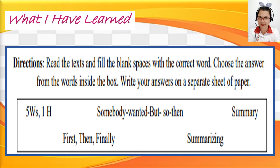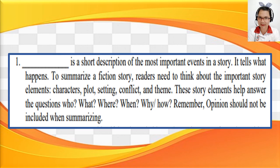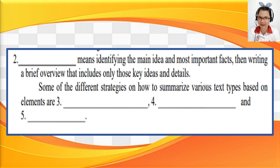Do you understand now how to use the three strategies in summarizing various text types based on elements? Very good. Now let's answer the next activity. Read the text and fill the blank spaces with the correct word. Number 1: summary. Number 2: summarizing. The three strategies on how to summarize various text types based on elements are: Somebody Wanted But So Then, 5Ws and 1H, and First, Then, Finally.